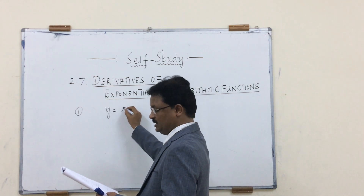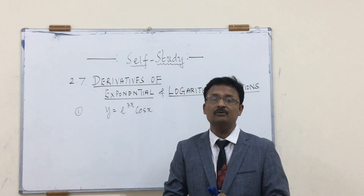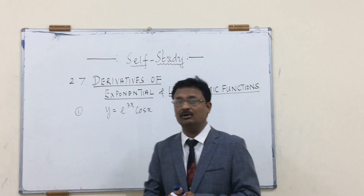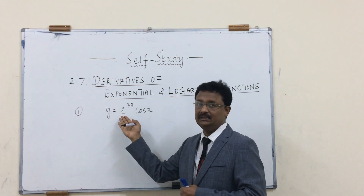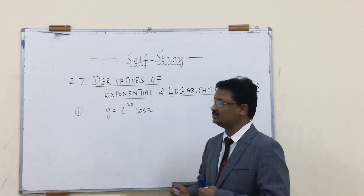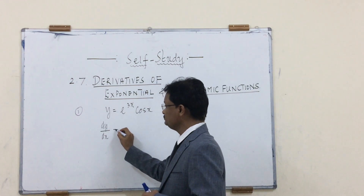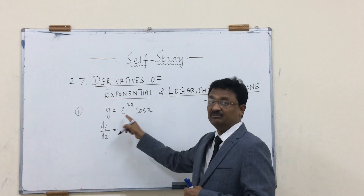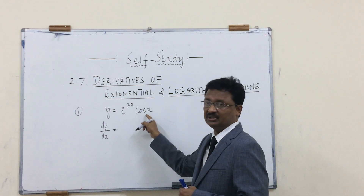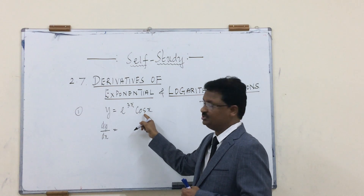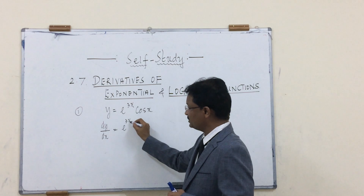Example 1: if the question is y = e^(3x) · cos(x), how to find the first derivative. This is a product of two different functions — exponential f(x) = e^(3x) times g(x) = cos(x). So dy/dx applies the product rule: f times g′ plus g times f′.